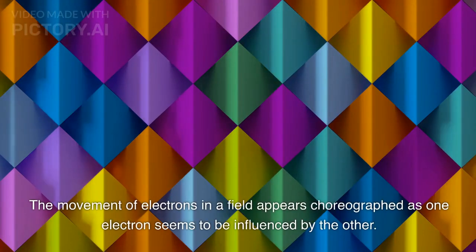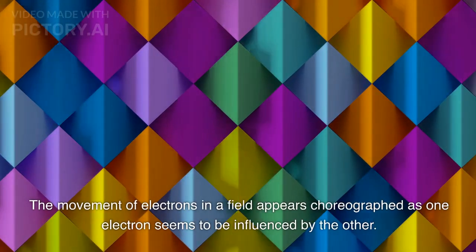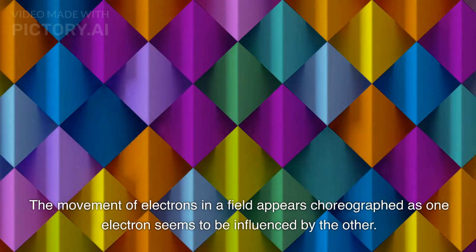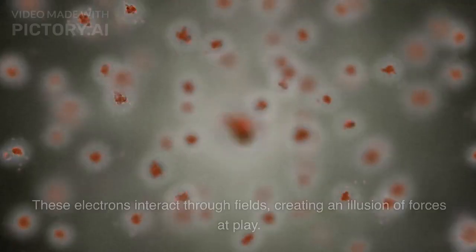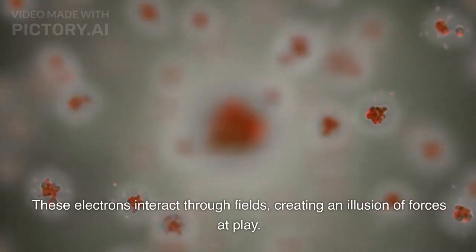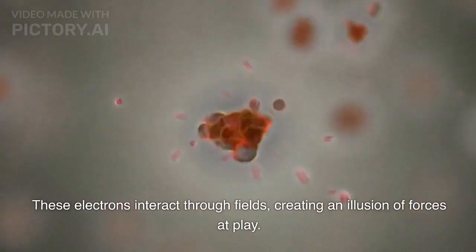The movement of electrons in a field appears choreographed as one electron seems to be influenced by the other. However, it is actually a result of intricate movements and interplay between the electrons in the field. These electrons interact through fields, creating an illusion of forces at play.